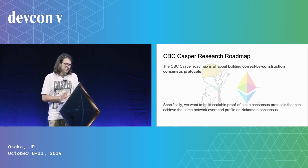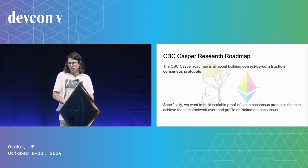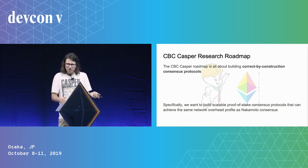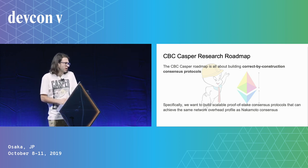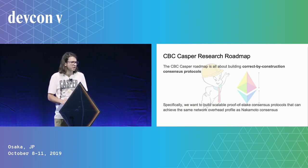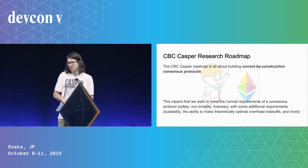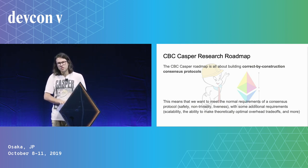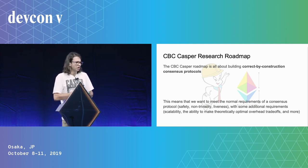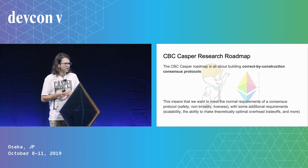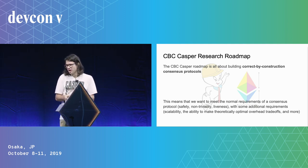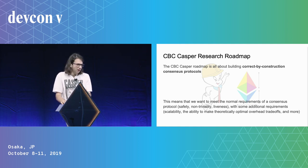Specifically, we're interested in scalable proof-of-stake consensus protocols that have the same network overhead as Nakamoto consensus. We want blockchains that work at internet scale without the crazy overhead of traditional consensus protocols — comparable to the overhead of current Ethereum. We want to meet all traditional requirements of a consensus protocol: safety, non-triviality, and liveness, plus the theoretically optimal overhead trade-off. We're also interested in scalability via sharding, understood entirely within a consensus protocol framework.